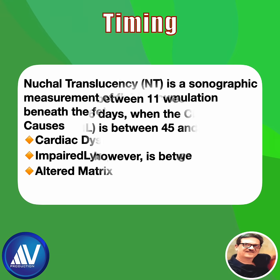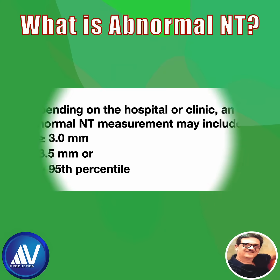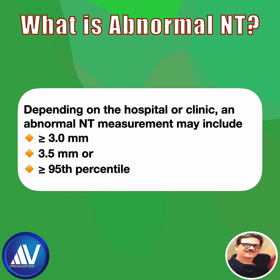It is performed between 11 weeks and 13 weeks plus 6 days, when the crown-rump length is between 45 and 84 millimeters. The best time, however, is between 12 to 13 weeks. An abnormal NT measurement may include anything greater than or equal to 3 millimeters or 3.5 millimeters, or greater than the 95th percentile.